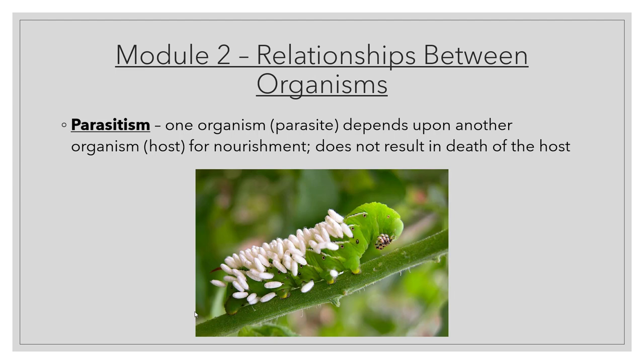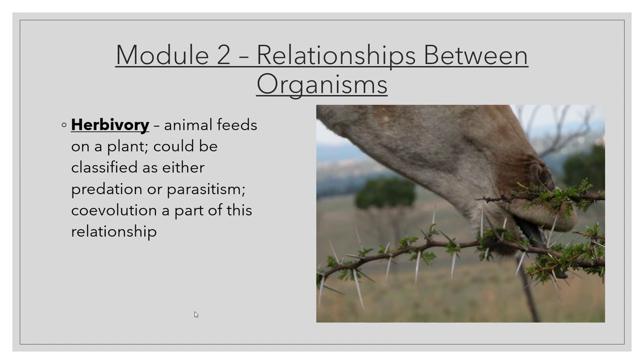Parasitism is where one organism — the parasite — depends upon another organism — the host — for nourishment. It should not result in the death of the host, because if the host dies, the parasite dies as well. The example shown is the larvae of a parasitic wasp that latches onto a caterpillar. The baby wasp feeds on the caterpillar until it hatches from its egg, then goes on its way.